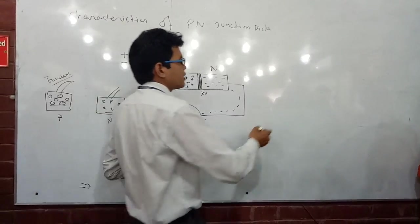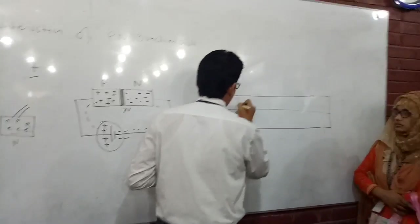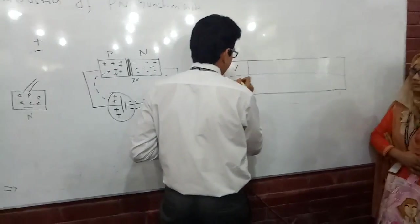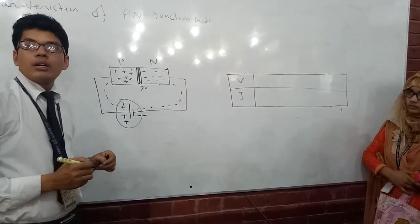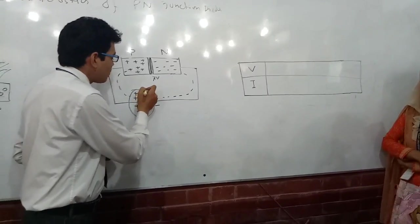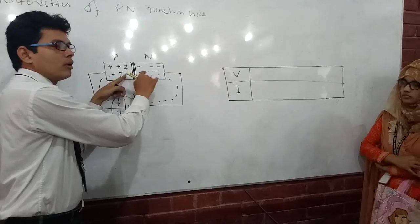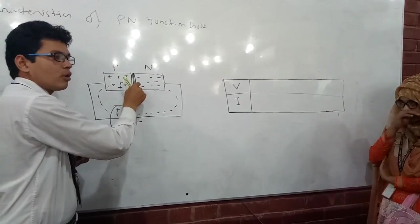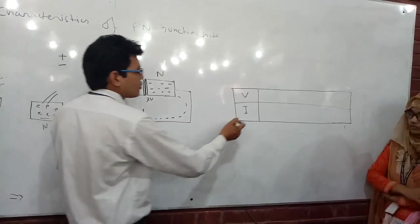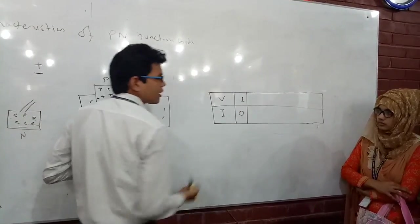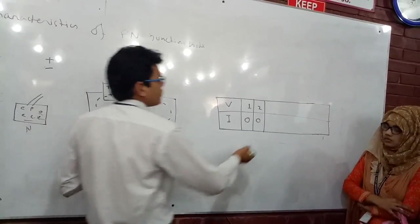Let's draw a table — voltage V versus current I. At the very first time the potential source applies maybe 0.1 volt. The force is not enough to break the barrier, so there will be no flow of electrons and therefore no current. At 0.2 volt again there is no current. As we keep increasing the voltage — 0.3, 0.4, 0.5, 0.6, and 0.7 — we can observe how the current changes.